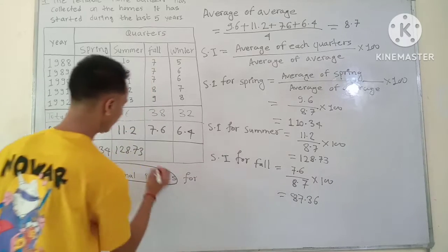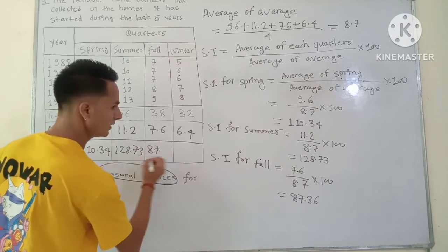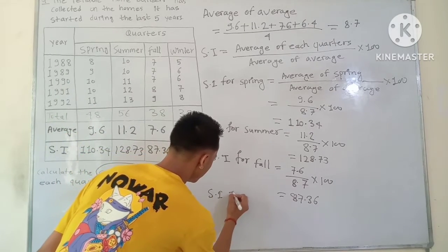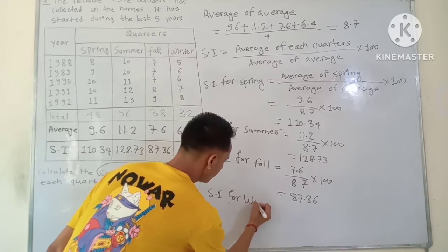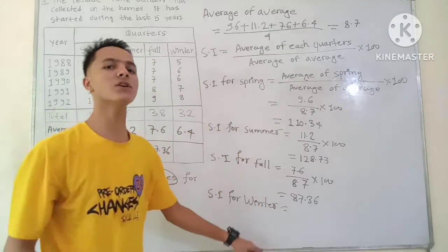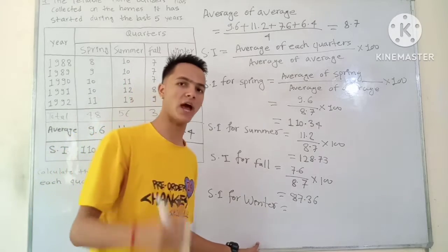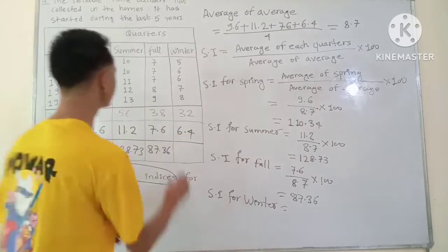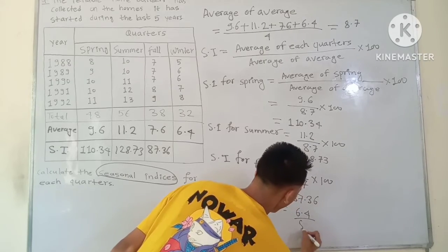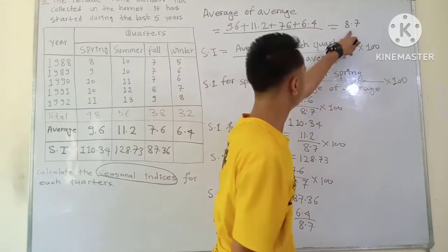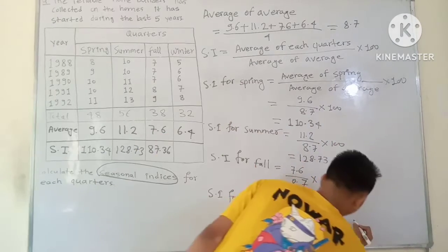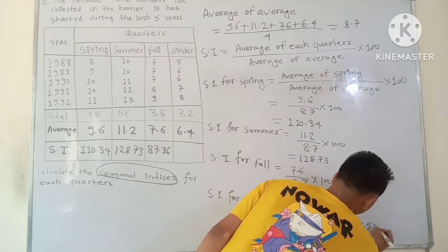Then Fall: Seasonal Index for Fall is Average of Fall 7.6 divided by Average of Average 8.7, into 100, which gives 87.36. Then Winter: the formula gives Average of Winter 6.4 divided by Average of Average 8.7, into 100, which equals 73.56.